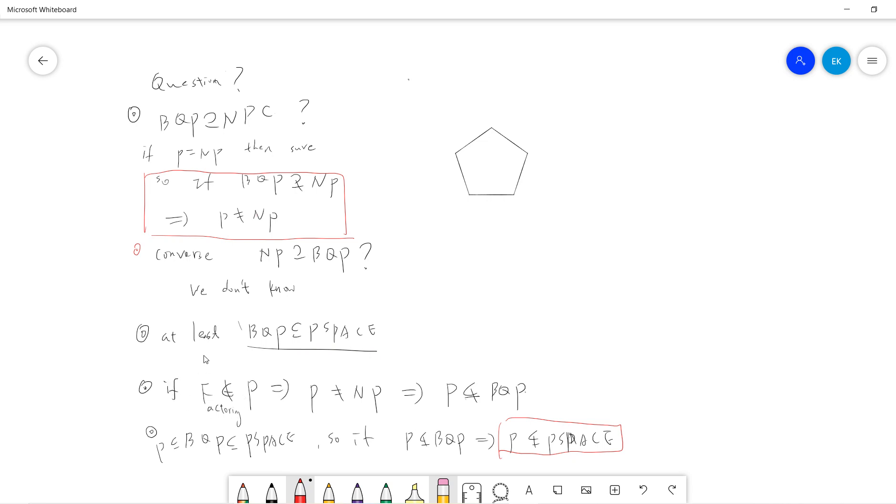If someone is smart enough to prove factoring is not in P, then it's obvious that P is not equal to NP. The reason is that factoring is in NP.